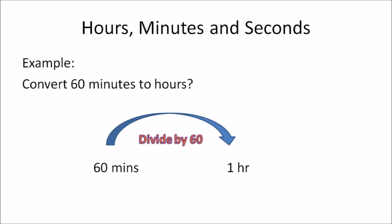In this example: convert 60 minutes to hours. In order to do that, you need to divide the amount you have in minutes by 60 to get an answer in hours. So 60 minutes divided by 60 gives you one hour.